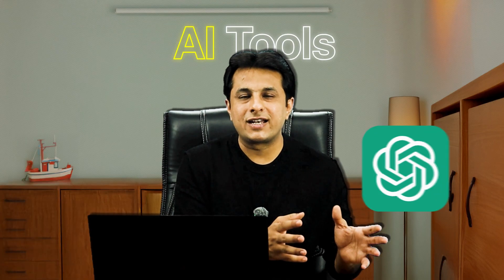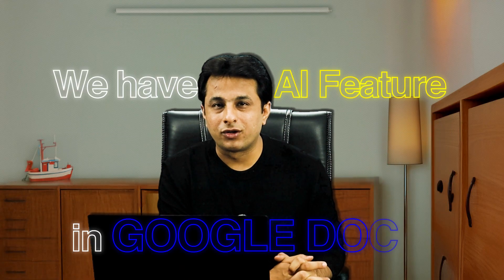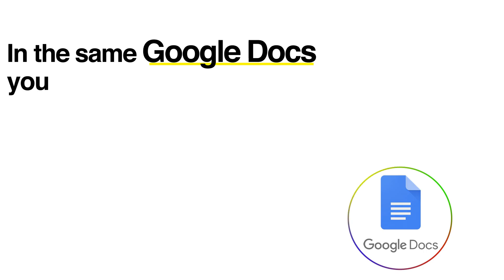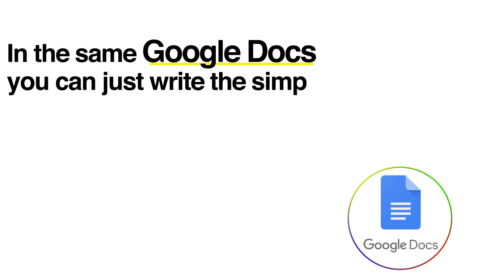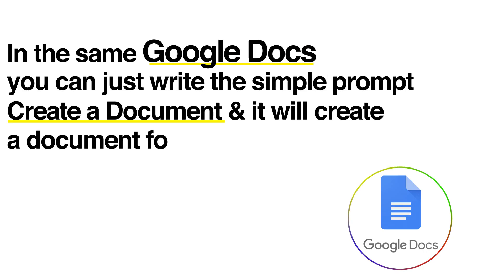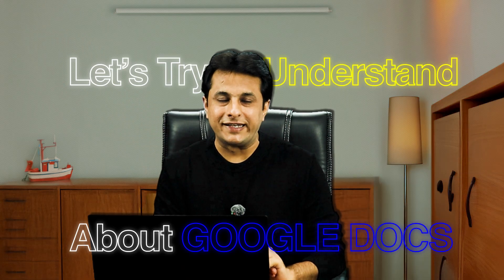People use different AI tools like ChatGPT and Gemini to write content and then bring it back into Google Docs. But there is a built-in AI feature in Google Docs where you don't have to go to third-party software. Right inside Google Docs, you can write a simple prompt, create a document, and it will generate a document for you within a few seconds. Let's explore Google Docs in detail.